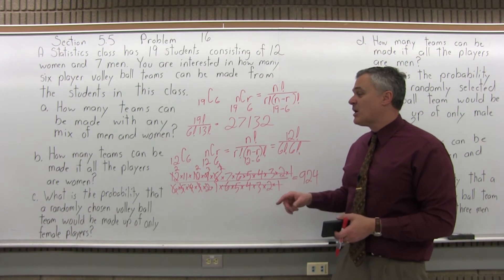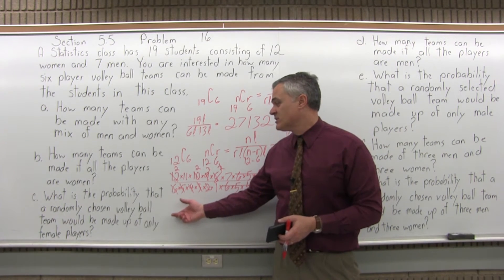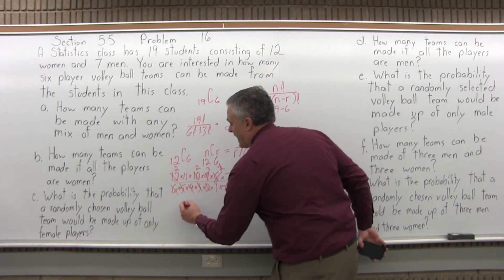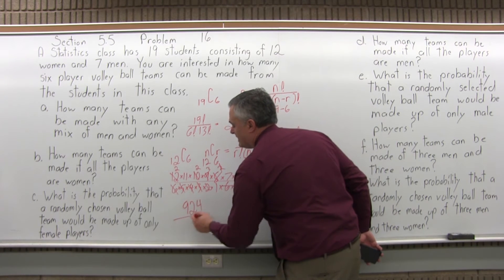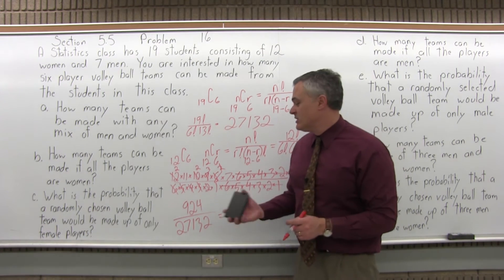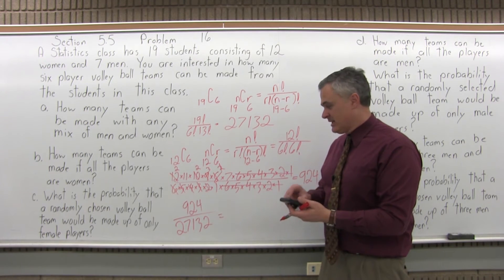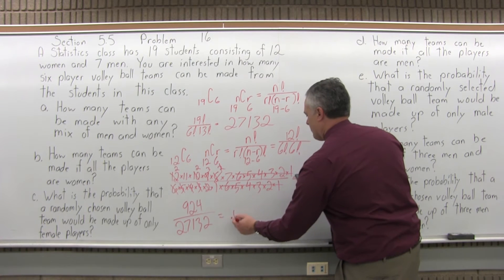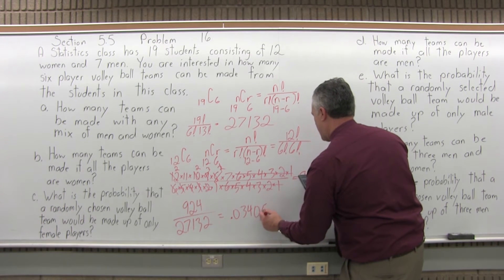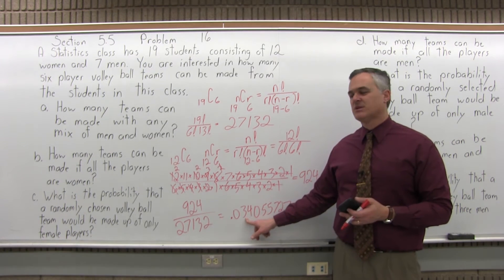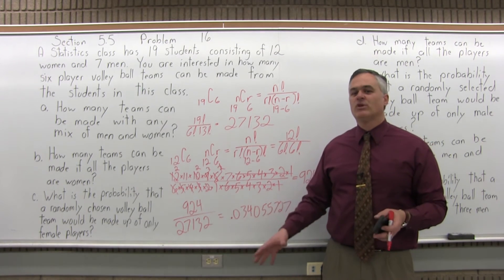Now, what is the probability that a randomly chosen volleyball team would be made up of only female players? There are 924 all-female teams out of 27,132 teams possible altogether. Dividing: 924 divided by 27,132 is approximately 0.034, about a little less than 3.5% probability that if you randomly pick a team, it would have only women on it.